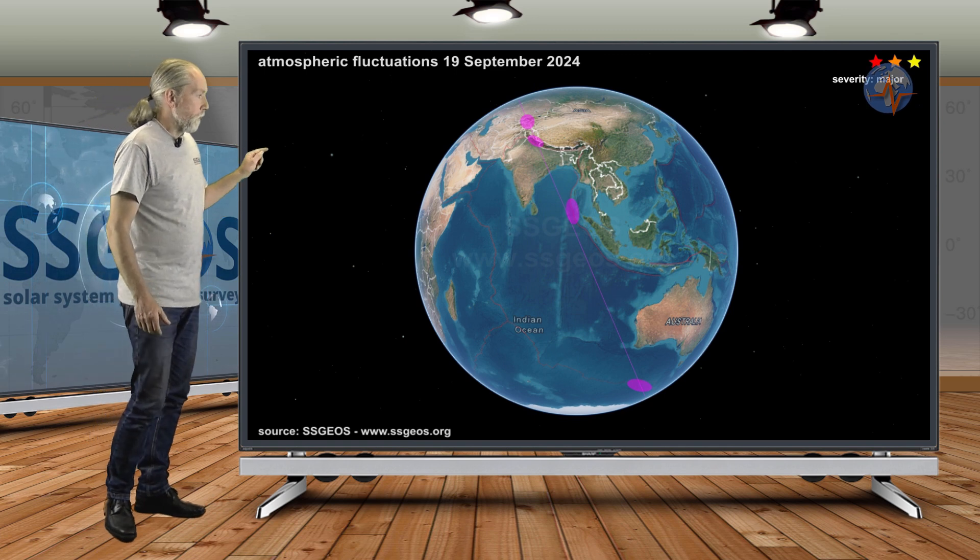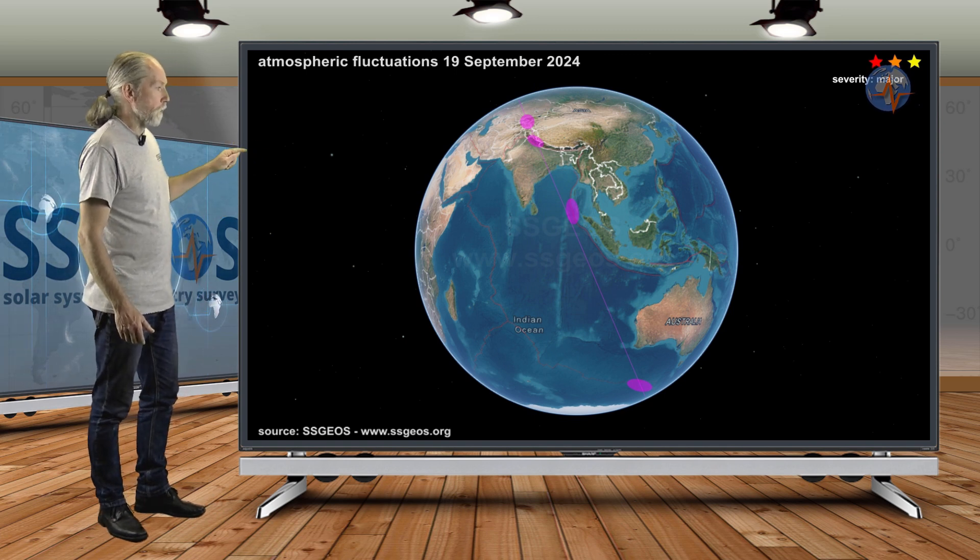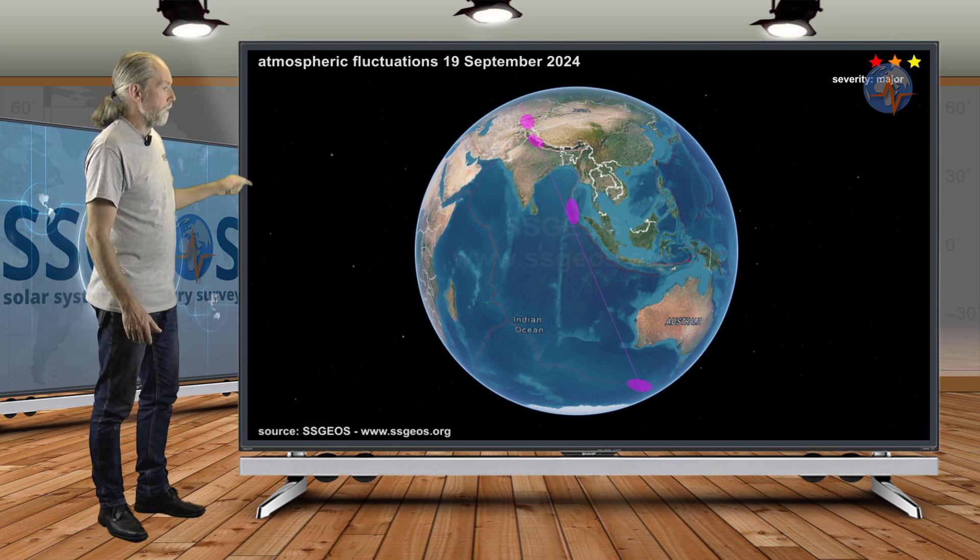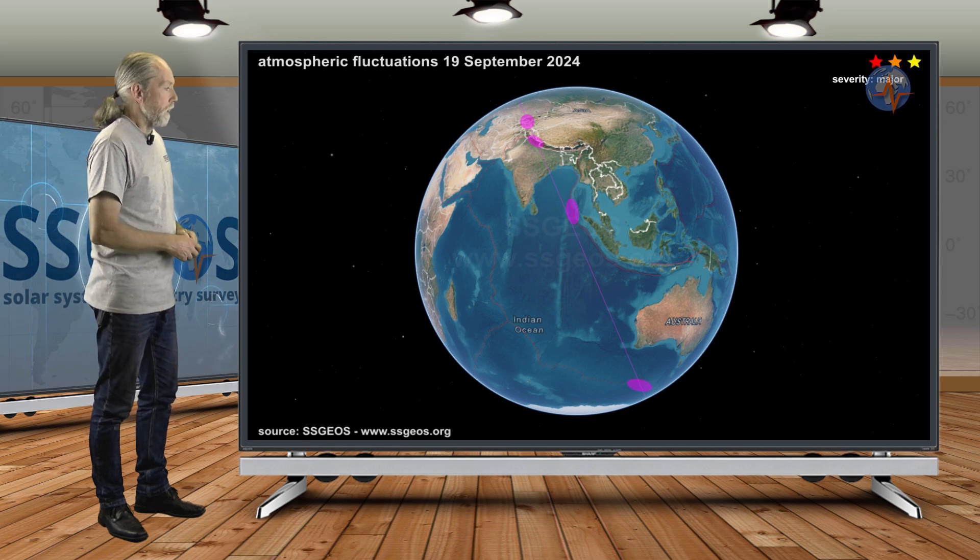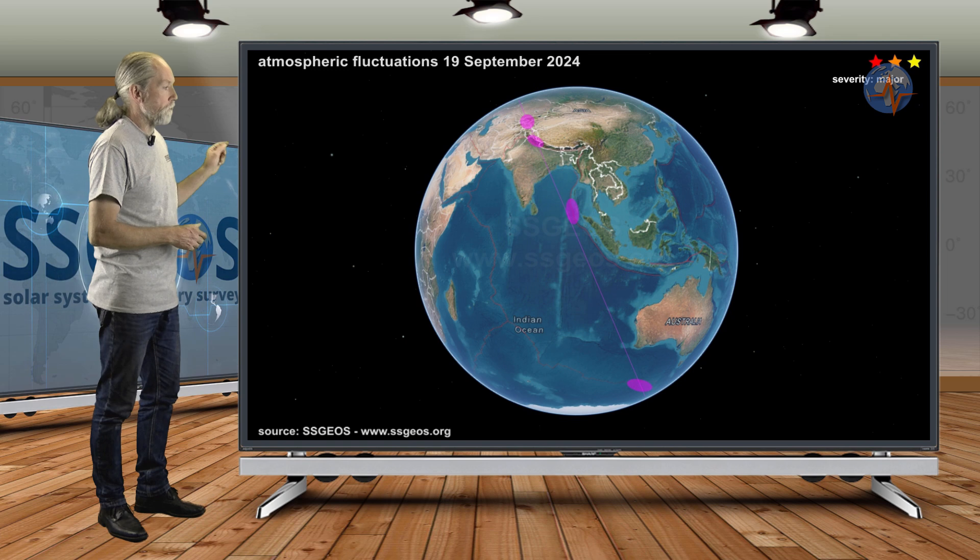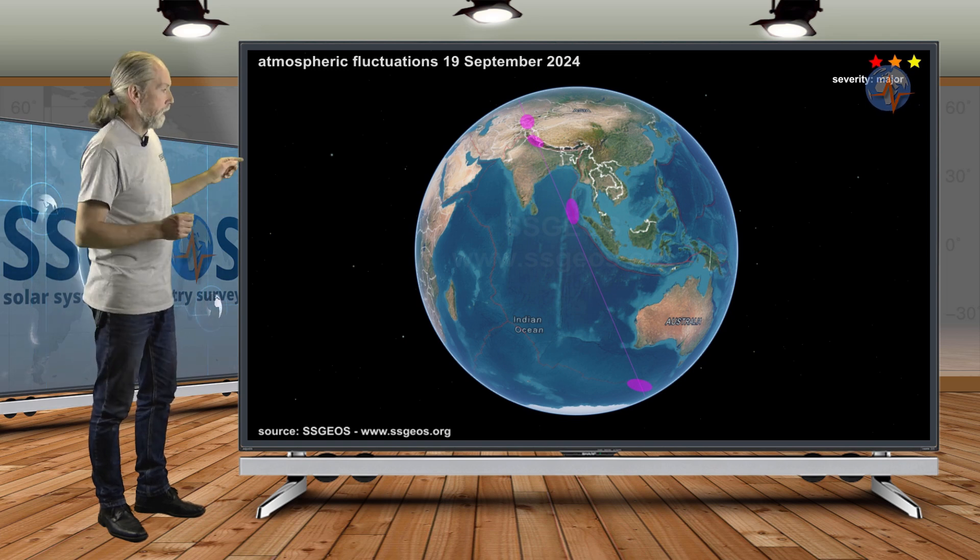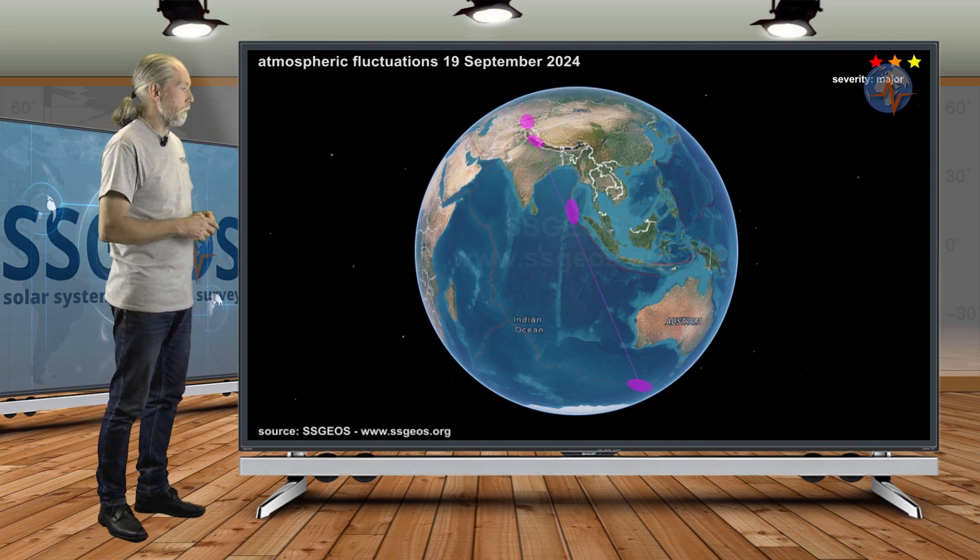But we do have these fluctuations on the 19th, and that was South Australia and up north, that's north of Sumatra near the Andaman Islands, and also further north the western part of the Himalayan mountains in the Kush region.